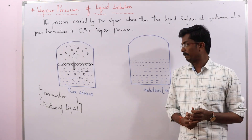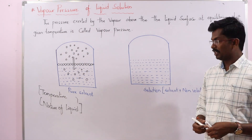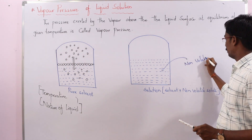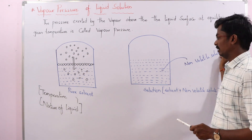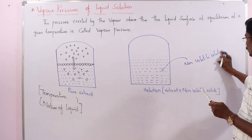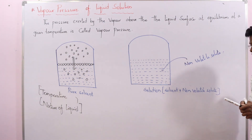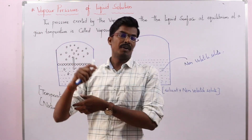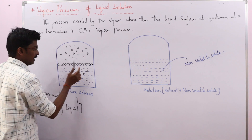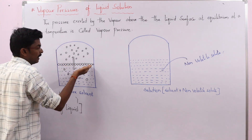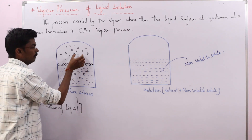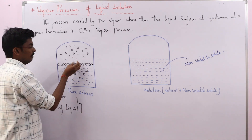Now I would like to compare the vapour pressure of a pure solvent and a solution containing a non-volatile solute. For the pure solvent, the liquid surface contains all solvent particles. The number of solvent particles is more, and when the number of solvent particles is more, they are ready to escape easily — so we can expect more particles escaping from this surface.